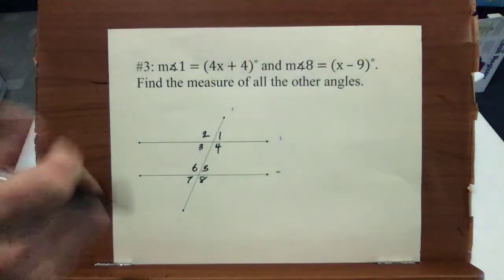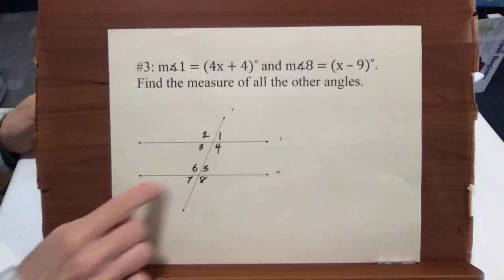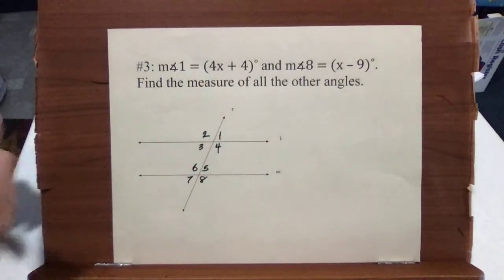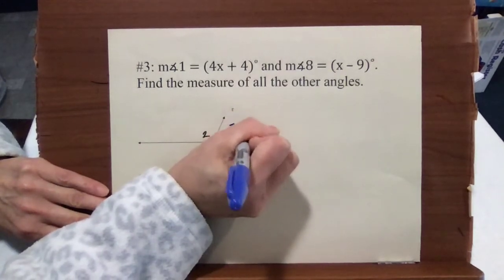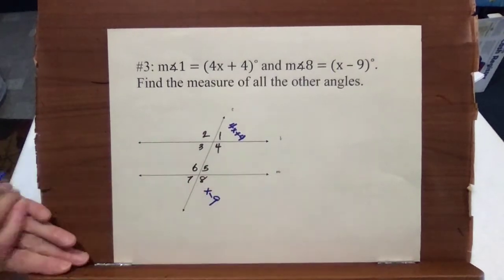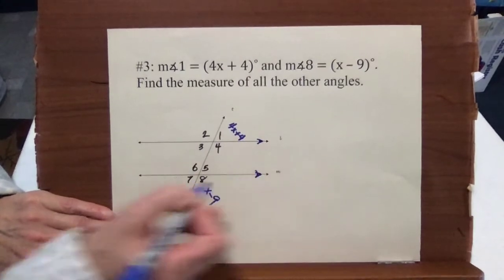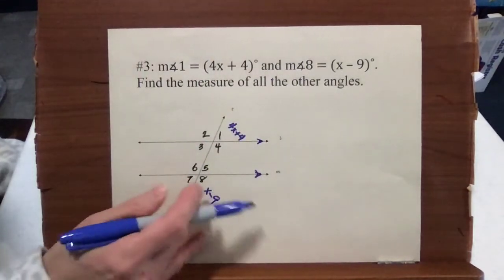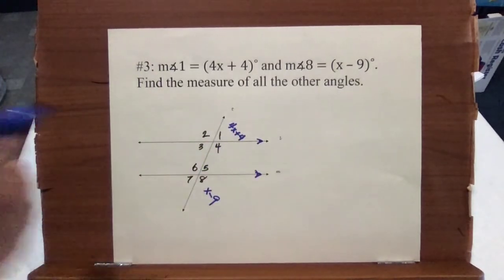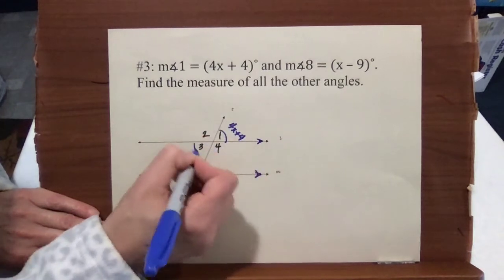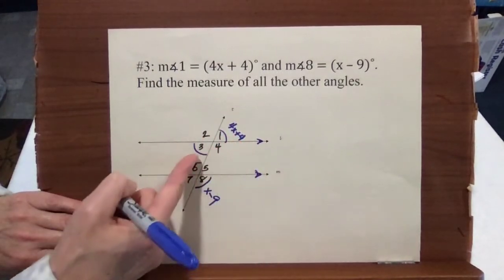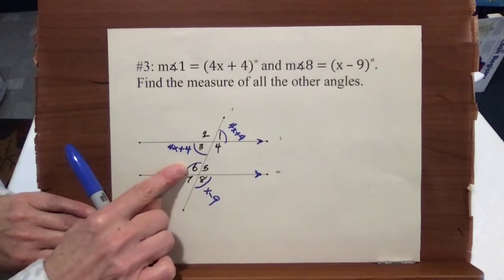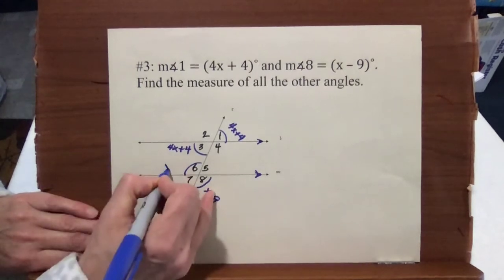Lastly, another problem. Again, look at the order in which your numbers are written for your angle names: this is 1, 2, 3, 4, and this one goes 5, 6, 7, 8. The measure of angle 1 is 4x plus 4, and the measure of angle 8 is x minus 9. We have parallel lines, so we're marking them. Angle 1 is outside on one side of the transversal and angle 8 is outside on the other side — we don't have a direct relationship between 1 and 8. But we do have a relationship between 8 and 6, and 1 and 3. Angle 1 equals angle 3, so I'll write 4x plus 4 there. Angle 8 is a vertical angle with 6, so angle 6 also equals x minus 9.